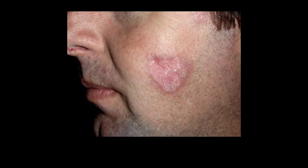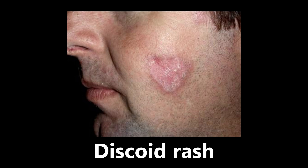Continuing with rashes — what we're seeing on the cheek is an example of a discoid rash. This is an erythematous and scaly patch of skin, very scaly, frequently appearing on the face and the scalp. It is seen in lupus — systemic lupus erythematosus. If you see this on the face or scalp, think discoid rash and think lupus.